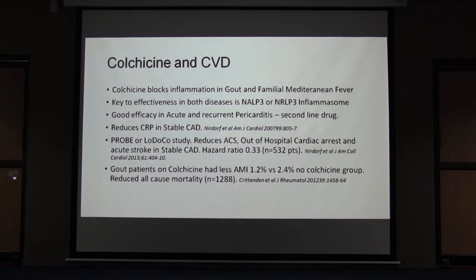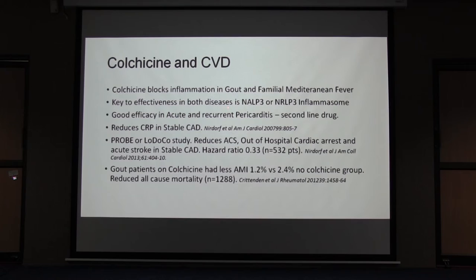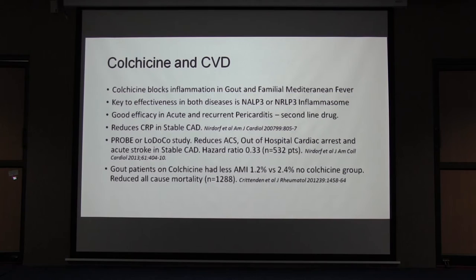Another drug used in rheumatology for management of gout has also been shown to be highly effective in preventing coronary atherosclerotic heart disease. Colchicine blocks inflammation in gout and familial Mediterranean fever. The key to its effectiveness in both is the NLRP3 inflammasome, which is blocked by colchicine. There is good efficacy in patients with acute and recurrent pericarditis, and it reduces CRP in patients with stable coronary artery disease.